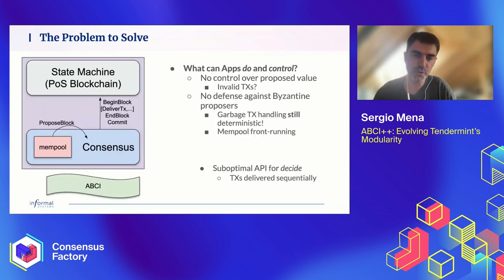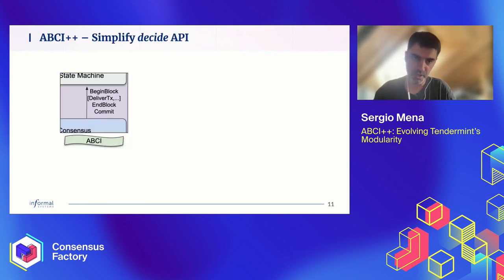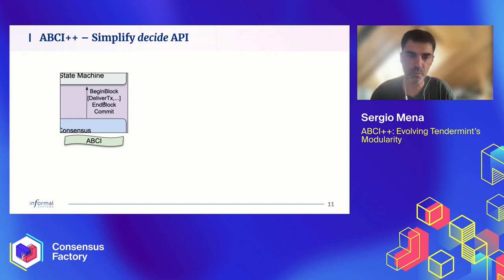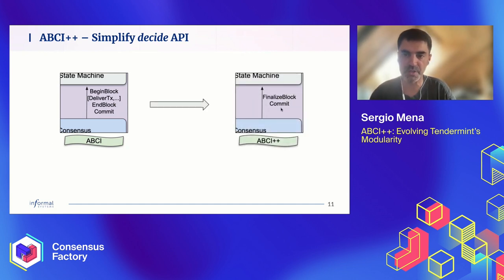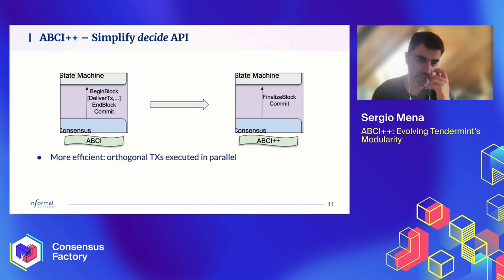In the next slides, I'll zoom in on different parts of this API to explain bit by bit the changes we've introduced. Let's start by the end — the Decide API. This is the simplest to explain. As you've seen, there is this sequence of APIs: BeginBlock, then DeliverTX zero or more times, EndBlock, and Commit. This has now been transformed into FinalizeBlock and Commit. We have coalesced all these calls into one single call that delivers the whole block in one shot.